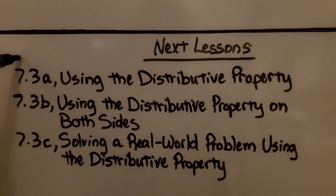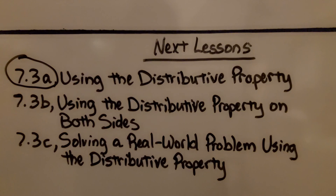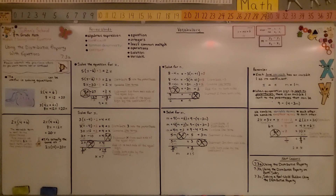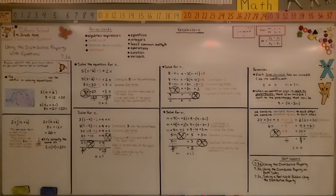We're finished with 7.3a. We're moving on to 7.3b: using the distributive property on both sides of the equation. Now you should be able to try this on your own and be able to solve for a variable. Have a wonderful day and join me for 7.3b. Bye!